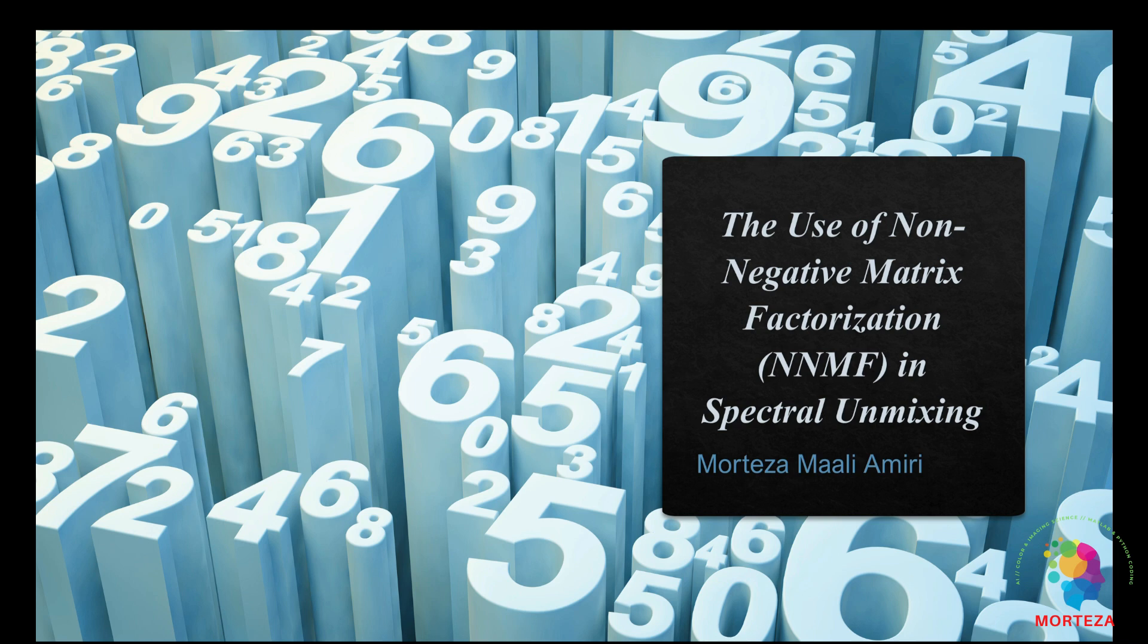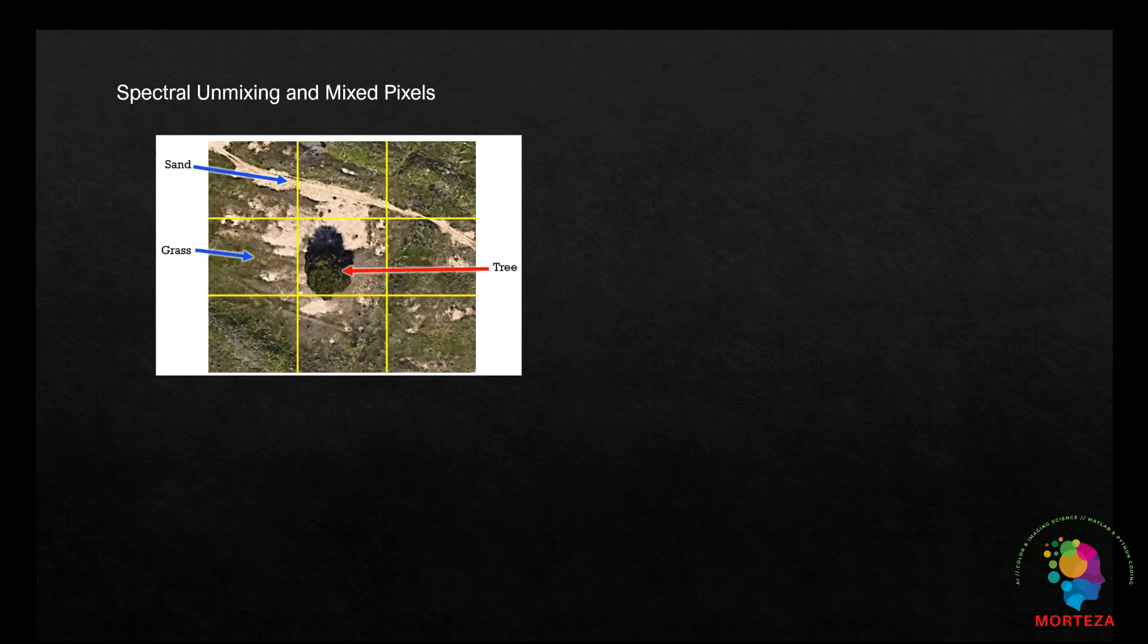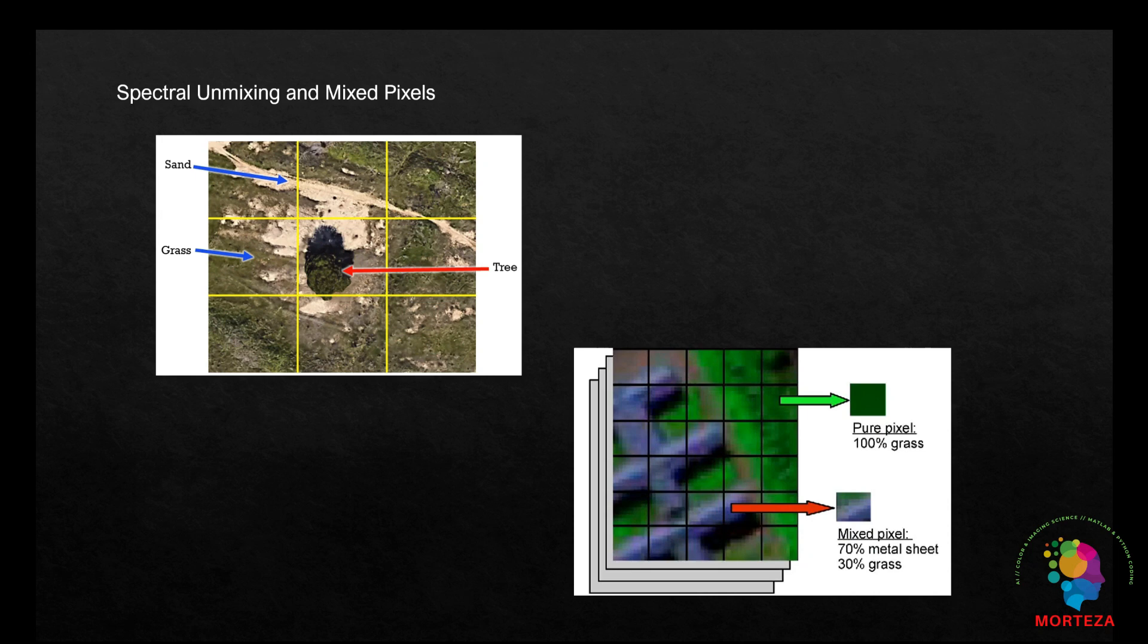In hyperspectral imaging, each pixel captures the reflectance spectra across a large number of spectral bands. In many cases, the area represented by a single pixel contains multiple materials. This results in mixed pixels, where the recorded spectrum is a combination of several pure material spectra, known as endmembers.